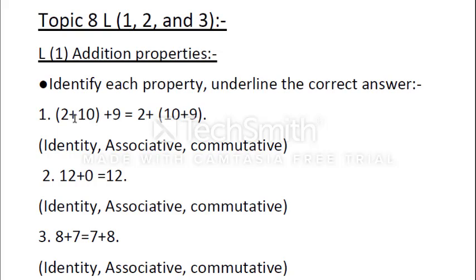On the left side, we grouped 2 plus 10 together, then added 9. On the right side, we grouped 10 plus 9 together, then added 2. Left side: 2 plus 10 equals 12, and 12 plus 9 equals 21. Right side: 10 plus 9 equals 19, plus 2 equals 21. We get the same answer.